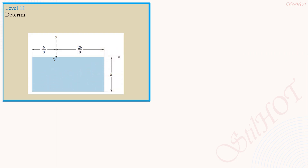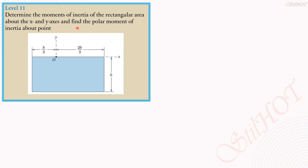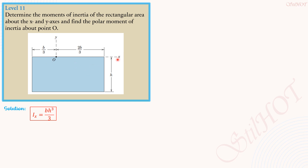Level 11. Determine the moments of inertia of the rectangular area about the x-axis, x and y-axis, and find the polar moment of inertia about point O. Since the x-axis coincides with the base, the base is equal to b, then Ix equals bh³ over 3 from our results in the previous slides. The moment of inertia of a rectangle with respect to the base is bh³ over 3.